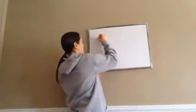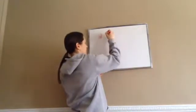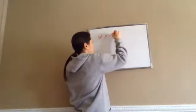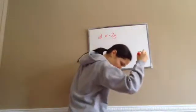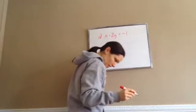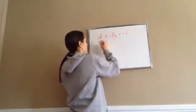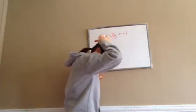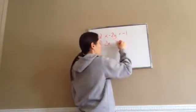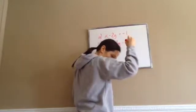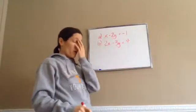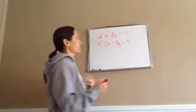Problem A: x minus 2y equals negative 1. Problem B: 2x minus 3y equals 4. Basically you're trying to figure out what's the answer for x and what's the answer for y.